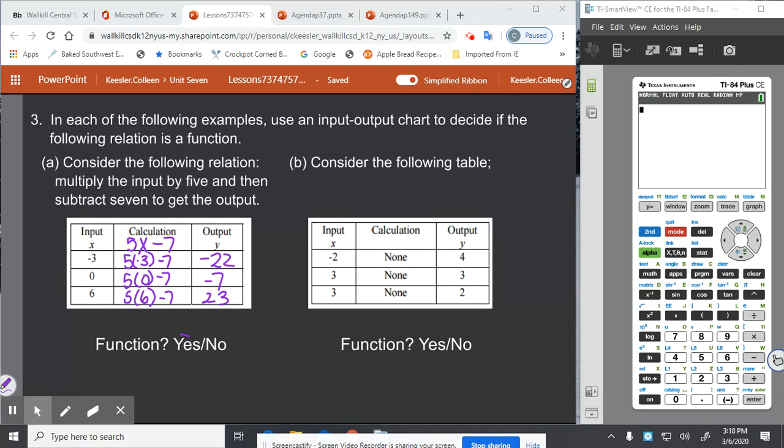So is that a function? Yes, it's a function because each input only has one output. Now over here, there's no calculation. I have negative two paired with four, three paired with three, and three again paired with two. So this is not a function because the input of three has more than one output.